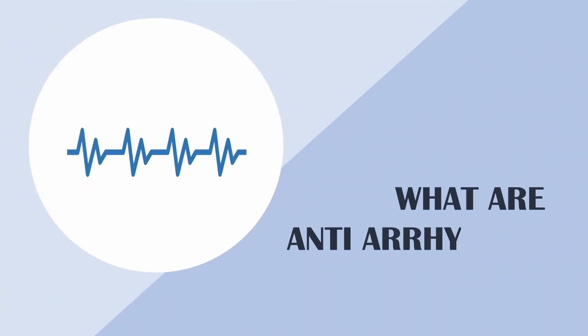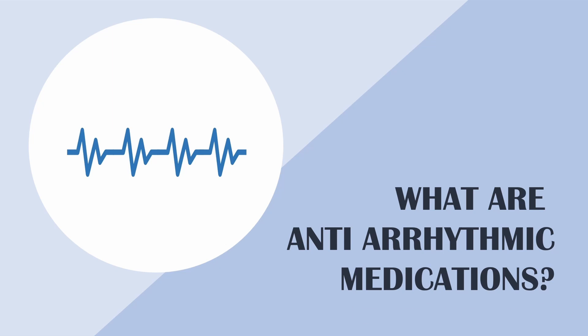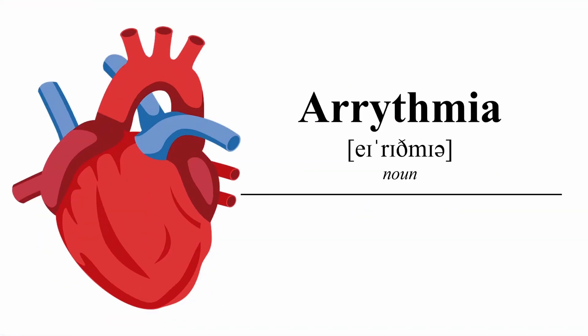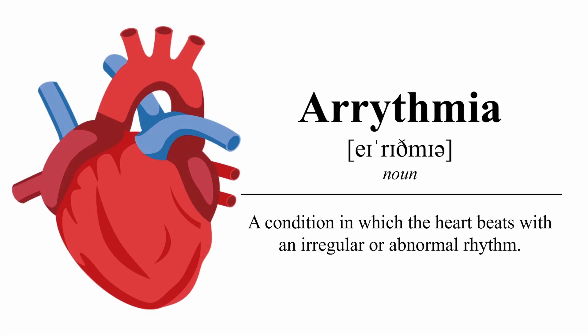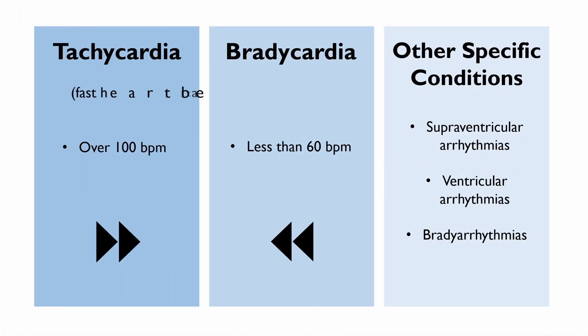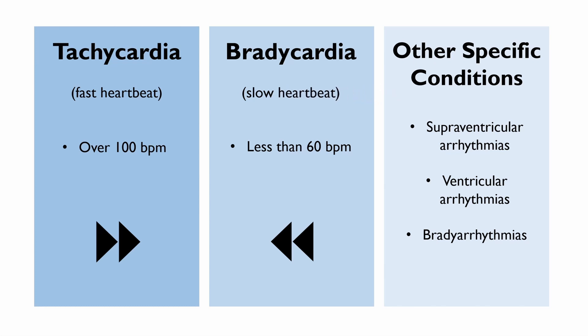Today we are going to be talking about anti-arrhythmic medications. First, let's talk about arrhythmias. Arrhythmias are conditions involving irregular or abnormal heartbeats. An abnormal heartbeat can be one that beats too fast, also known as tachycardia, or one that beats too slow, also known as bradycardia. Abnormal heartbeats can be classified as a specific condition depending on the cause and type. Often, arrhythmias are caused by problems with the conduction of electrical impulses within the heart.